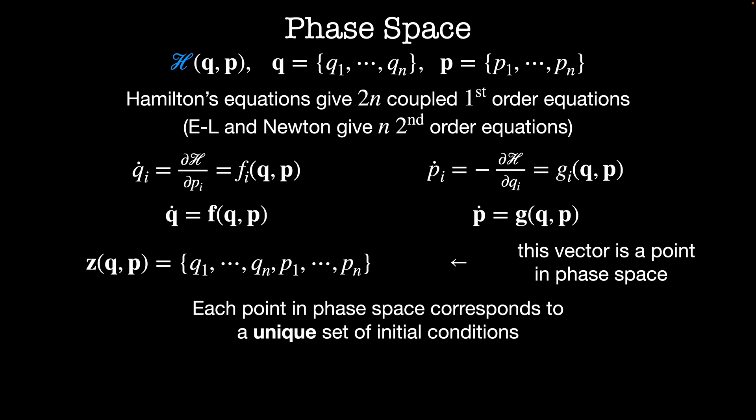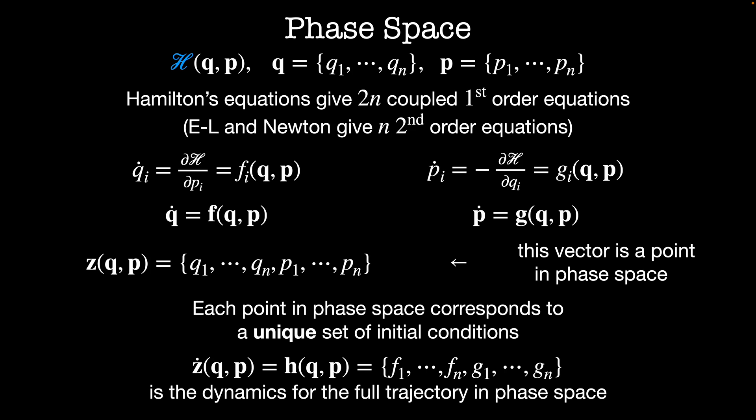Each point in phase space corresponds to a unique set of initial conditions. That is, each point Z tells us where each particle is located and what their momenta are at any given point in time. The entire dynamics of the system are obtained by evolving this point forward in phase space, according to Hamilton's equations.